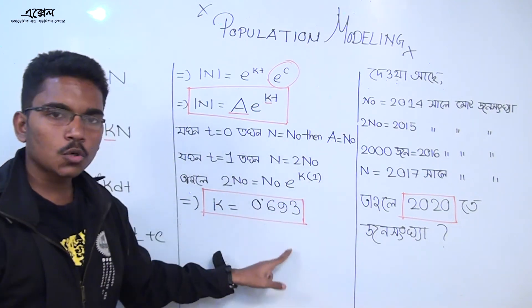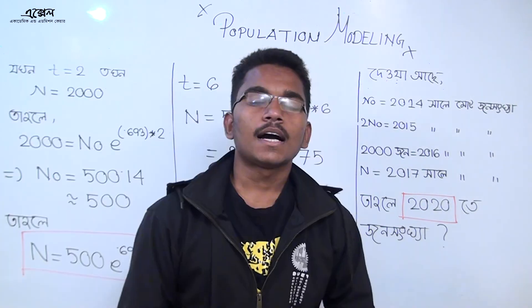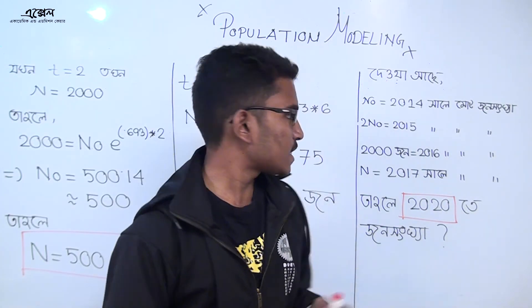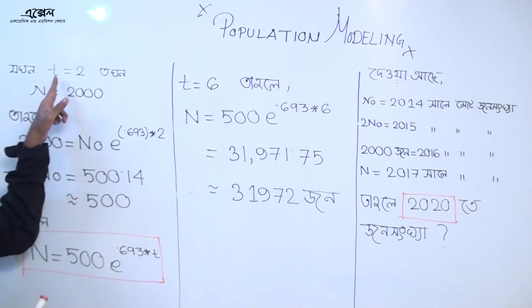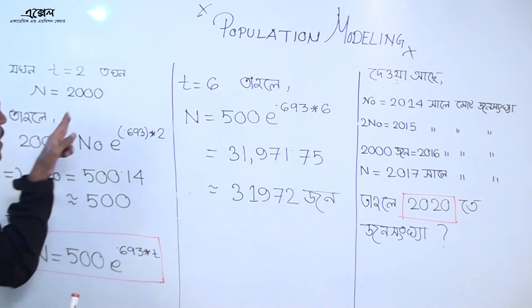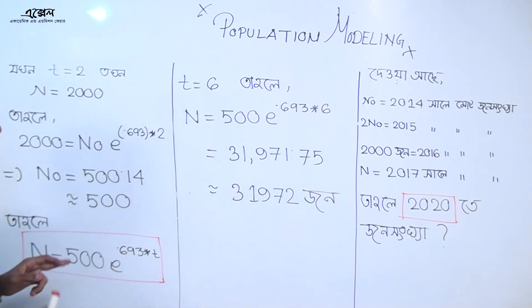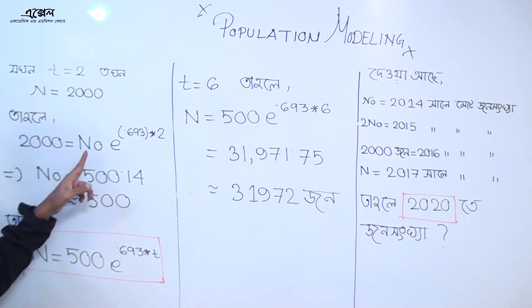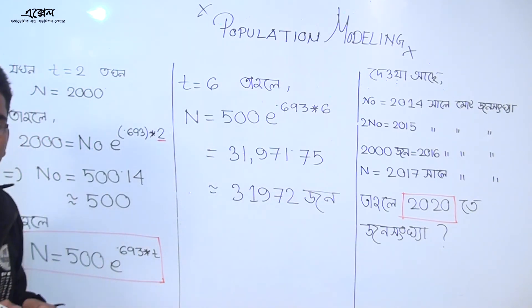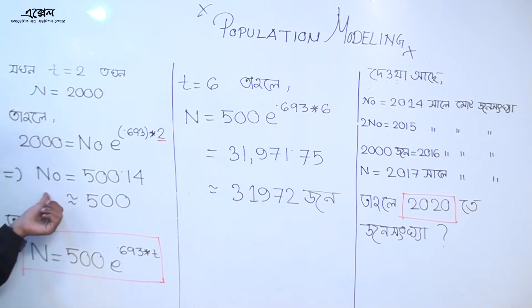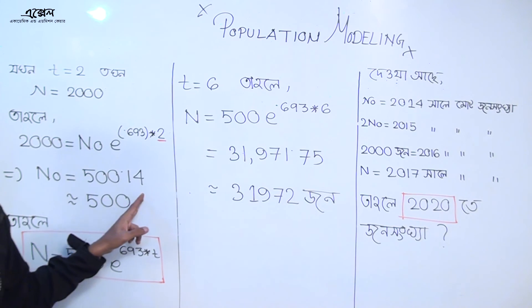If you read the question, what is 0.693? If you read the data from 2016, the question is 2000 is equal to n0 to the power 0.693 into 2. So tn is equal to 2. What is n0? n0 is equal to 0.14. So the question is 500.14.